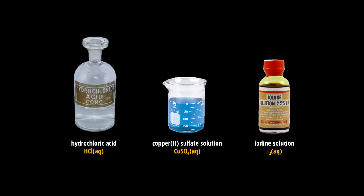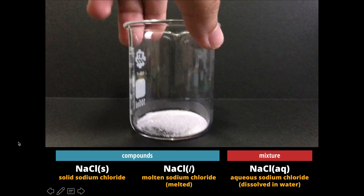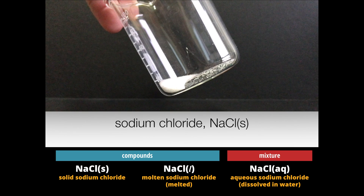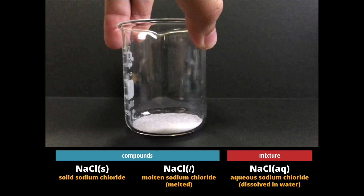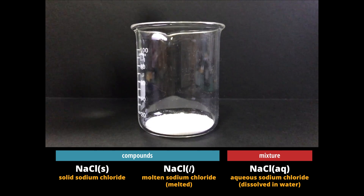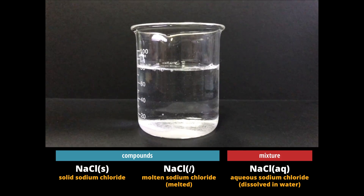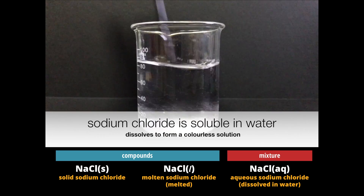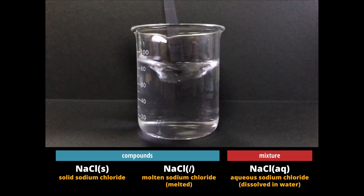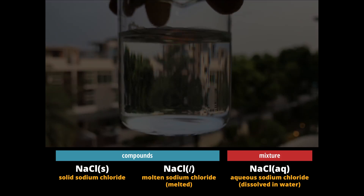We will now use some examples to illustrate when we can use each state symbol. Let's begin with sodium chloride. We watch sodium chloride being dissolved in water — sodium chloride in the solid state has water in the liquid state added to it. Sodium chloride, being a soluble salt, dissolves in water to give a colorless solution. The resulting product is aqueous sodium chloride.